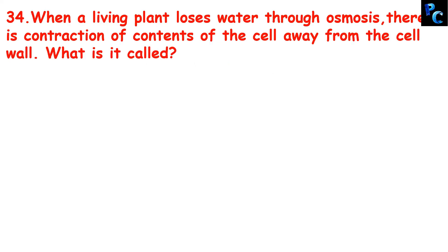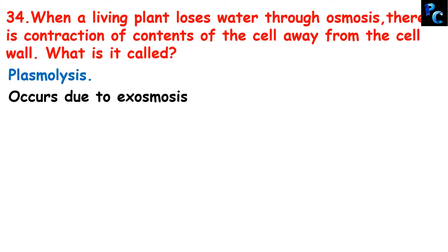When a living plant loses water through osmosis, there is a contraction of the contents of the cell away from the cell wall. What is this called? This is called plasmolysis. The plant is losing water through osmosis — water is going out of the cell due to exosmosis. So plasmolysis is a phenomenon which happens when exosmosis occurs in plant cells.